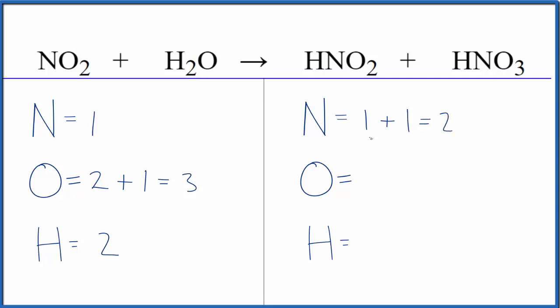That gives us two total nitrogen atoms. For oxygen we have two plus three, so five oxygen atoms. Hydrogen: one here and one here, so one plus one equals two. People have problems because we have hydrogens here and here, nitrogens here and here, and oxygens here and here - you have to count them all up correctly.